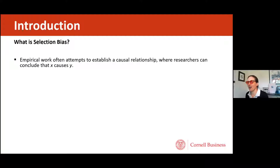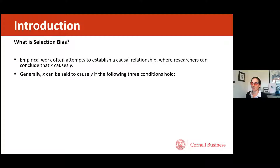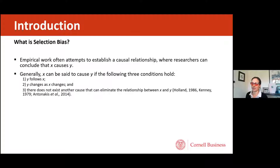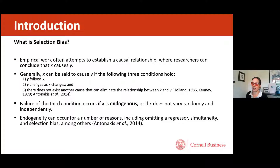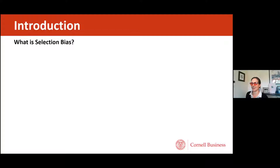What is selection bias? I'll be presenting some equations to help frame my thinking. Empirical work is often trying to establish a causal relationship — X causing Y — where Y follows X, Y changes as X changes, and there does not exist another cause that can eliminate the relationship between X and Y. X does not vary randomly and independently. Endogeneity can occur for a number of reasons, including omitting a regressor, simultaneity, and selection bias.